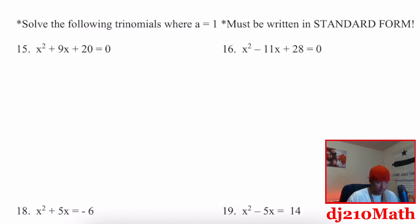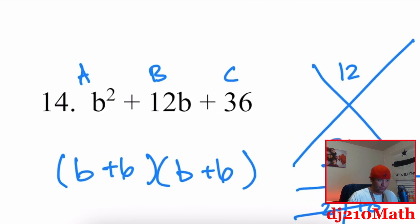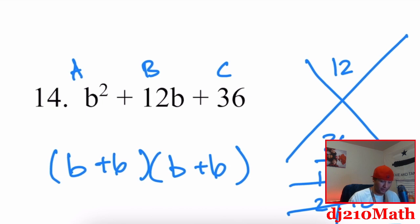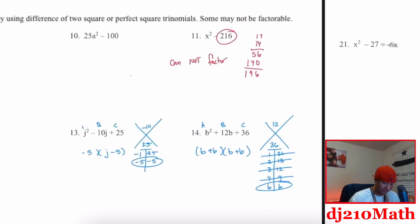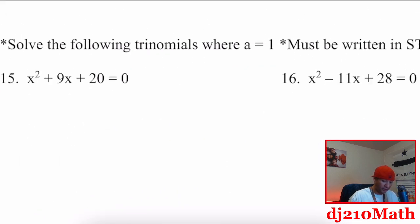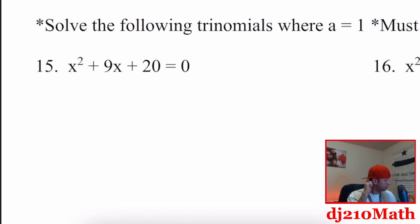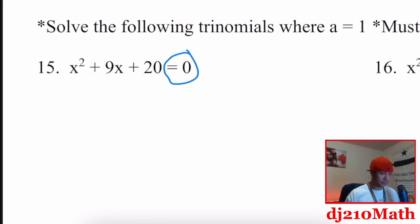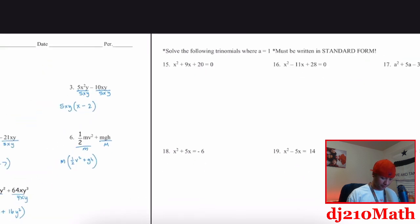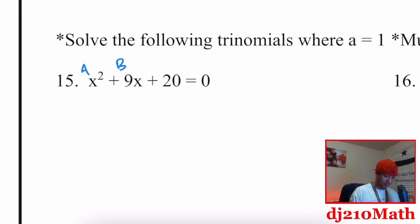Now switching to solving. For factoring, our answer is in parentheses with each variable plus or minus a number. When solving, the answers are variable equals a number — typically two solutions. Everything has to be moved to one side and set equal to zero before we start factoring. A, B, and C: A is one, which is a big deal because when A is one the math is really nice.